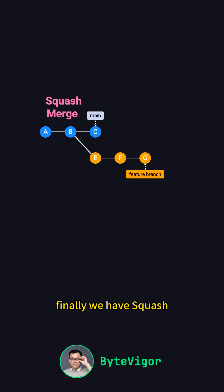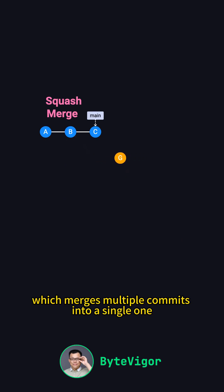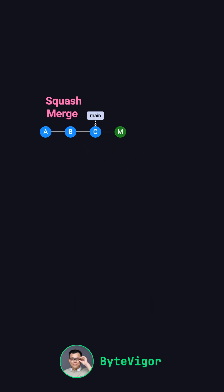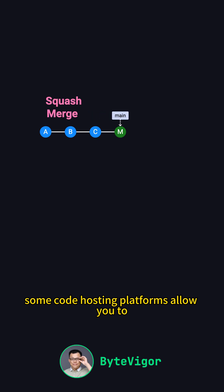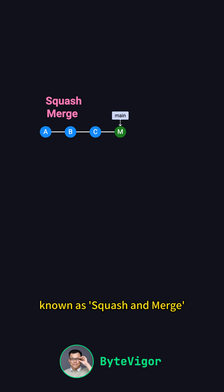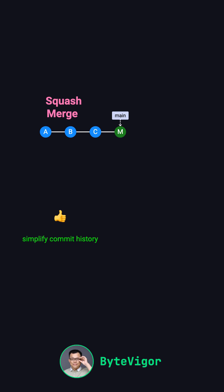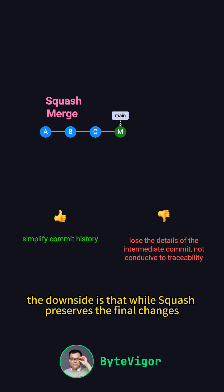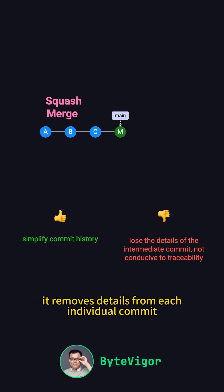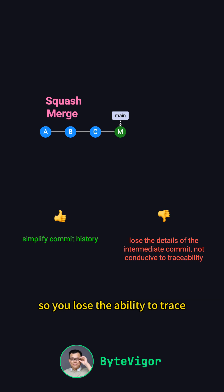Finally, we have Squash, which merges multiple commits into a single one. Some code hosting platforms allow you to use Squash in combination with Merge, known as Squash and Merge. If your feature branch has several small commits, Squash can combine them into one commit, keeping the history simple. The downside is that while Squash preserves the final changes, it removes details from each individual commit, so you lose the ability to trace every single development step.